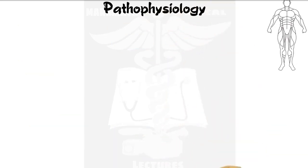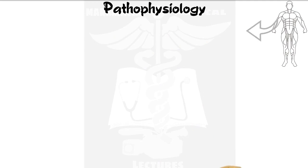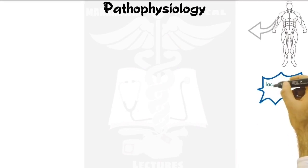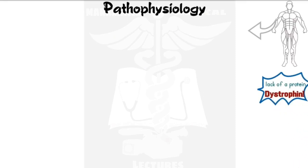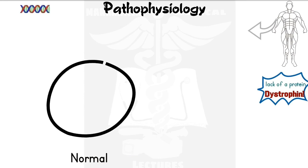Let's look at the pathophysiology and what's happening in these skeletal muscles. In skeletal muscles, there is found to be a lack of a protein called dystrophin, and this contributes to muscular dystrophy in Duchenne. Looking at a normal muscle: the nucleus of a muscle cell contains DNA, which encodes for RNA. The RNA gets transferred to the cytosol, where the ribosome codes for the protein dystrophin.